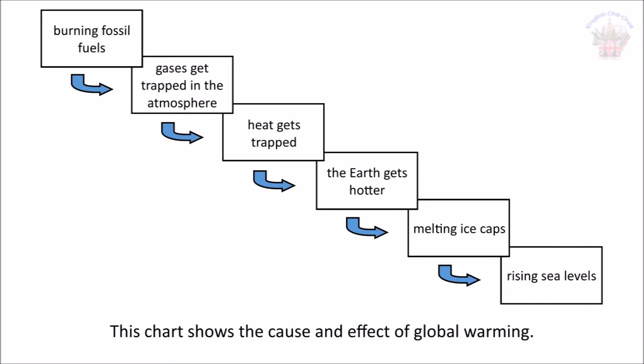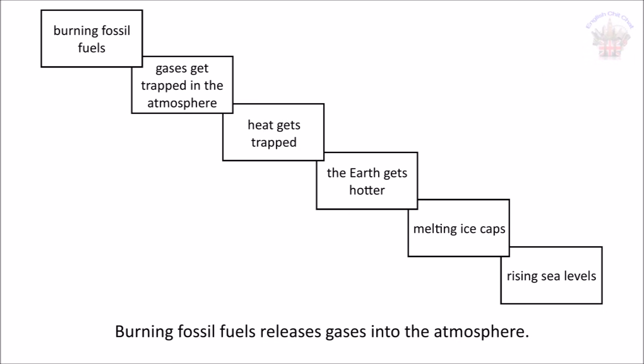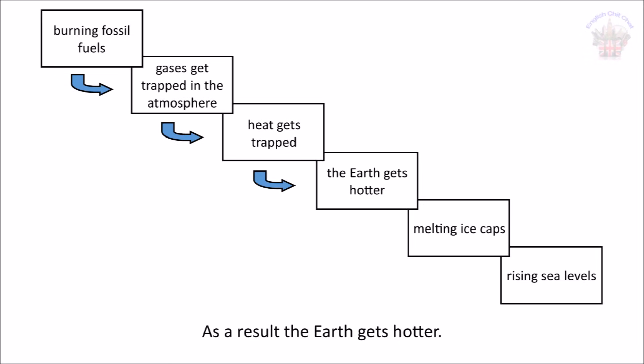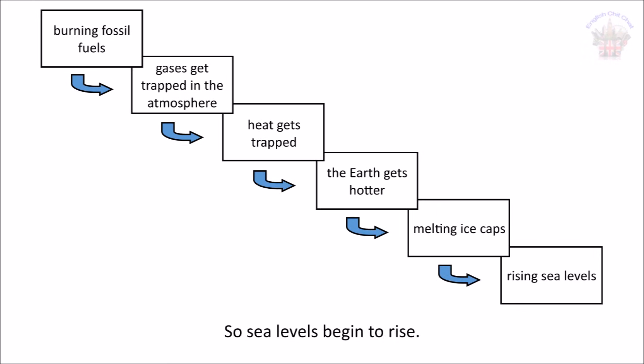This chart shows the cause and effect of global warming. Burning fossil fuels releases gases into the atmosphere. These gases then get trapped in the atmosphere, and this layer then traps heat. As a result, the earth gets hotter. This causes the ice caps to melt, so sea levels begin to rise.